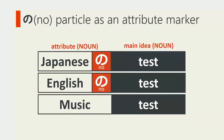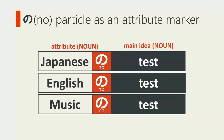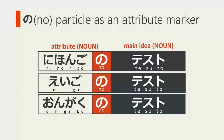If we're talking about English test, we mark 'English' with the の particle. And if we're talking about music test, we mark 'music' with the の particle. So Japanese test is 日本語のテスト, English test is 英語のテスト, music test is 音楽のテスト。